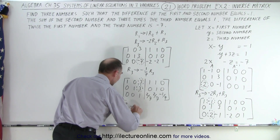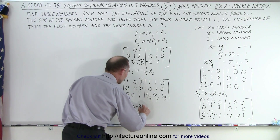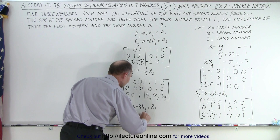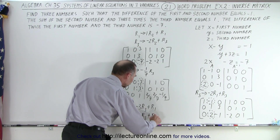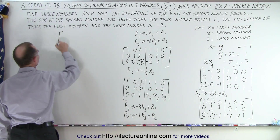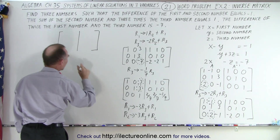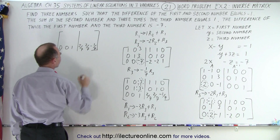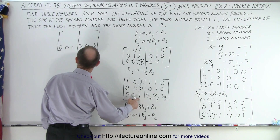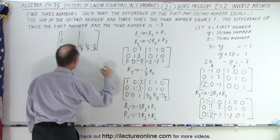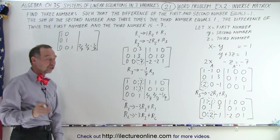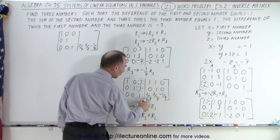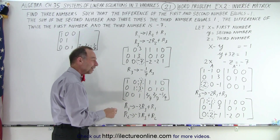I can do that by taking R1 and replacing it by the negative of that number times R3 and adding it to R1. For R2, I replace it by the negative of that number, which is negative 3, times R3, and add it to R2. So those two entries will become 0. The third row doesn't change: 0, 0, 1 and 2 over 7, 2 over 7, negative 1 over 7. For the first row, it's just the third column that's going to change. Negative 3 times R3 gives me negative 3, added to 3 gives me 0. Negative 3 times 2 over 7 is negative 6 over 7, added to 1 — that's 7 over 7 — which is 1 over 7.